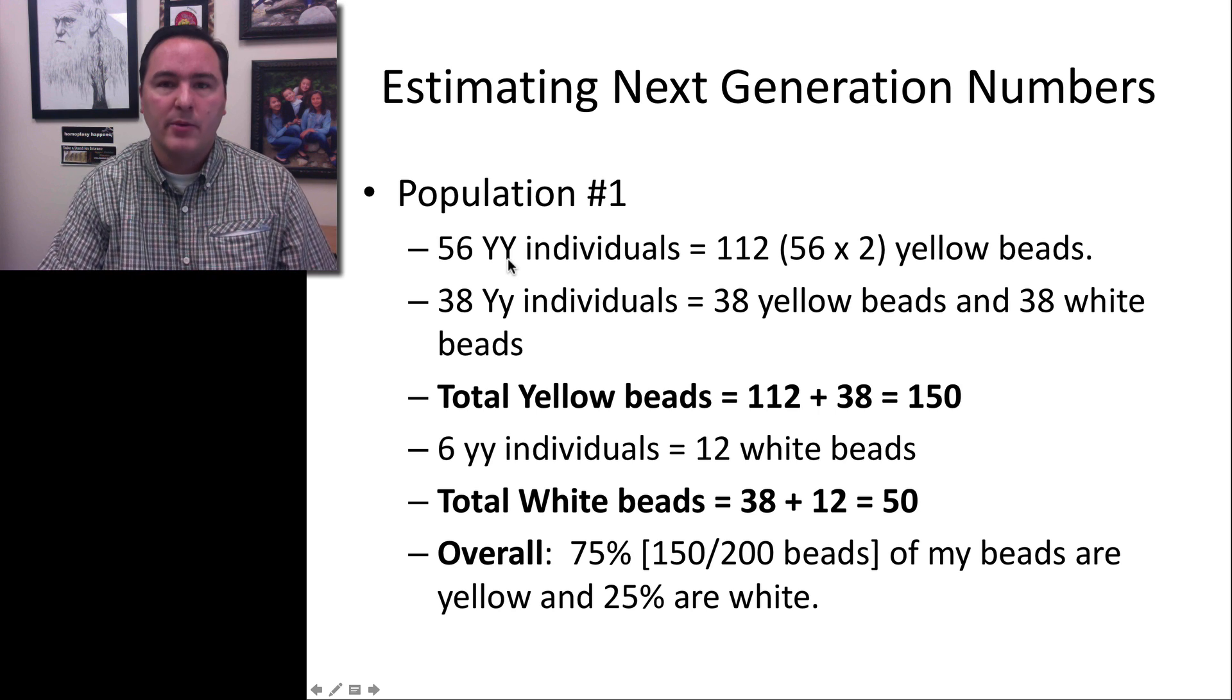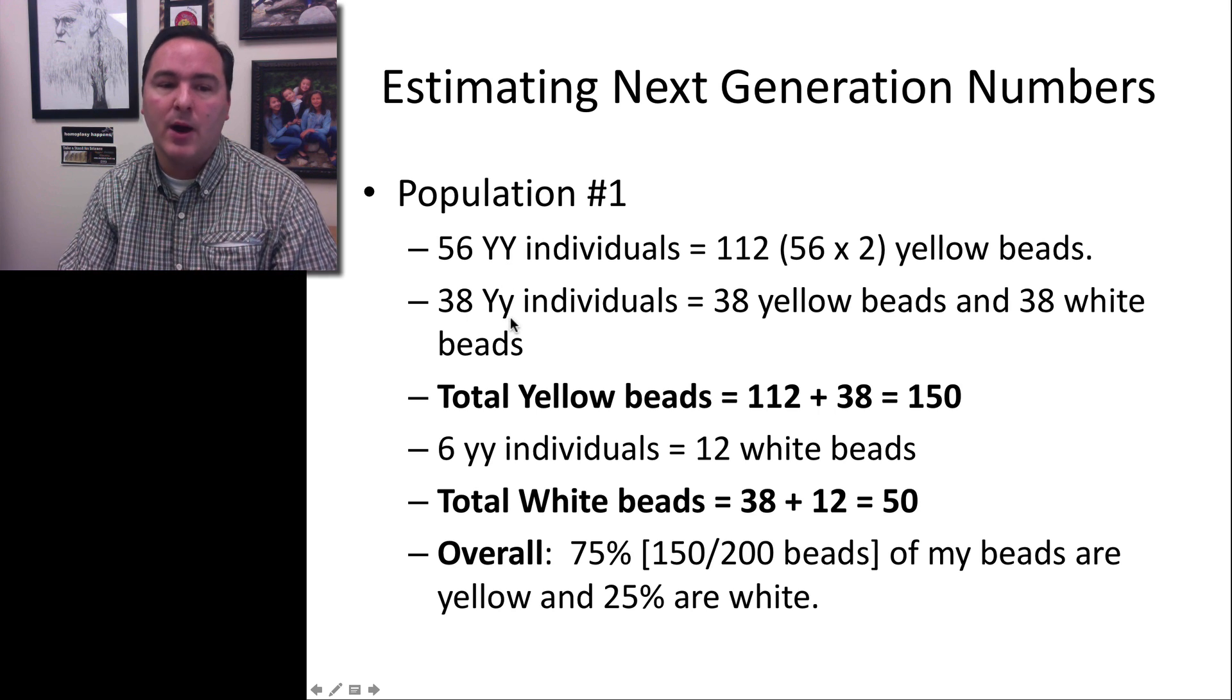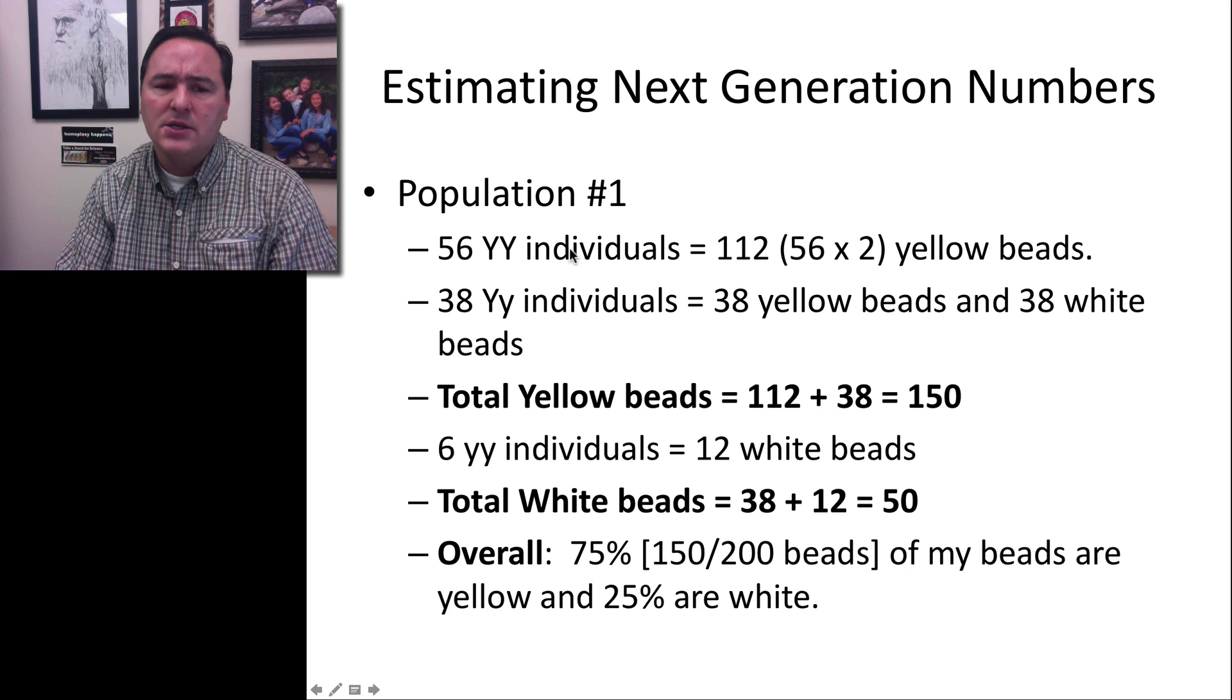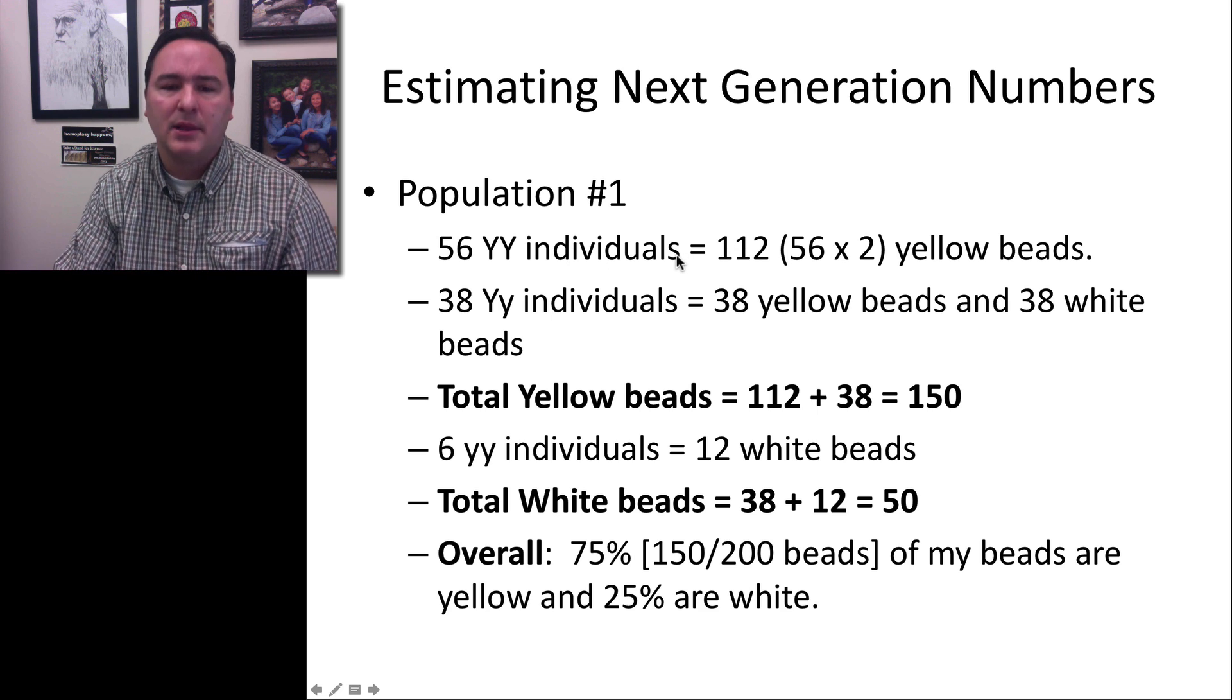For population one, where we sampled, we had 56 big Y big Y and 38 big Y little y. So let's say how many beads are there in that population?